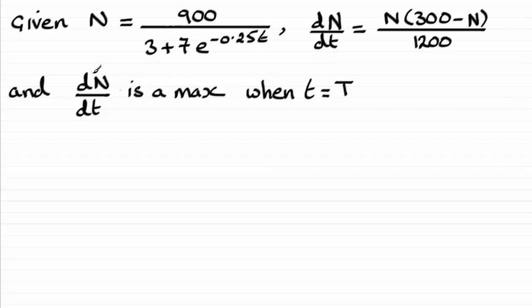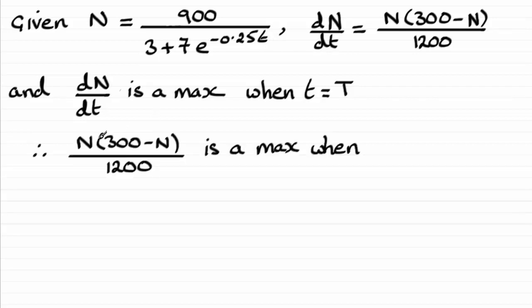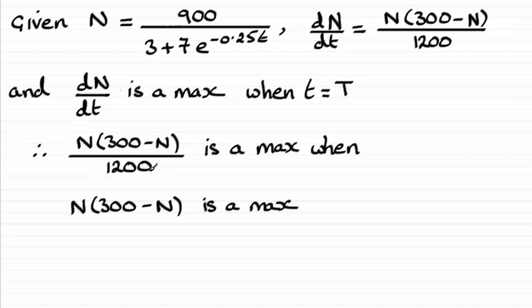We're being asked to find the value of t when dn/dt is a maximum. So we could take this equation and differentiate it again, put it equal to zero, and solve for n, then substitute that value back in and work out t from there. But it's much simpler than that. If we look at that fraction — n times 300 minus n, all over 1200 — it's going to be a maximum when the numerator is a maximum, because we're just dividing by a constant.